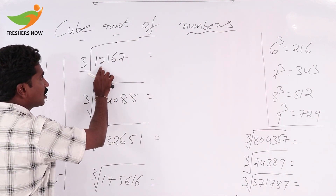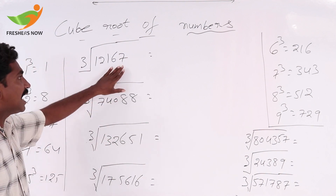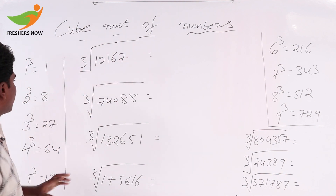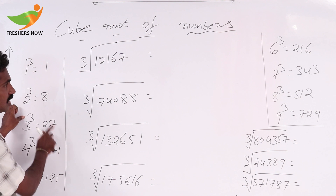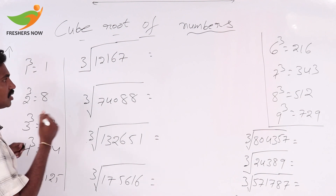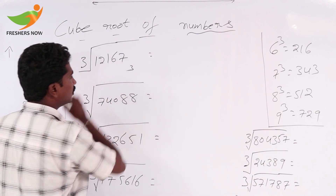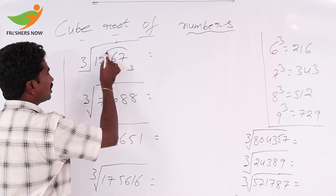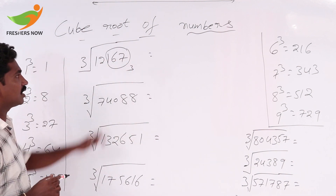We find the cube root of 1,167. At the units place value, 7 is there. 3 cube is 27, so the units place value is 3. Keep 3 and reduce away.